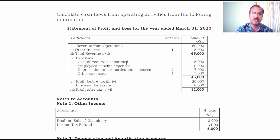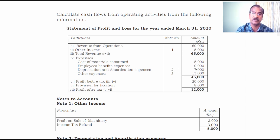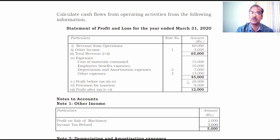Expenses are presented: cost of materials consumed 15,000; employee benefits expenses 10,000; depreciation and amortization expenses as per note number two, 7,000; other expenses according to note number three, 13,000. So the total expenses come to 45,000. From total revenue of 65,000, subtracting total expenses of 45,000, profit before tax amounts to 20,000 rupees.